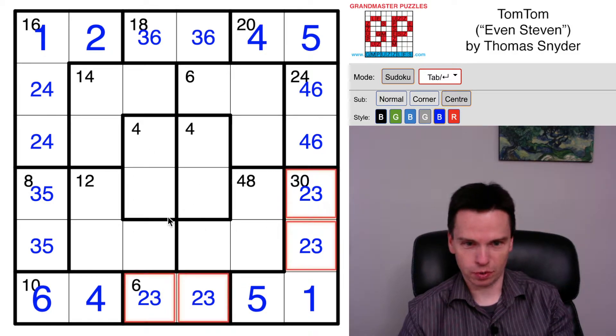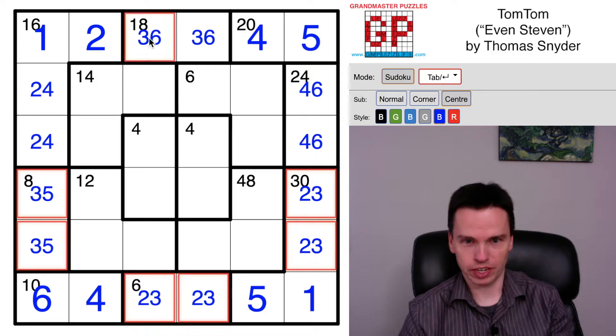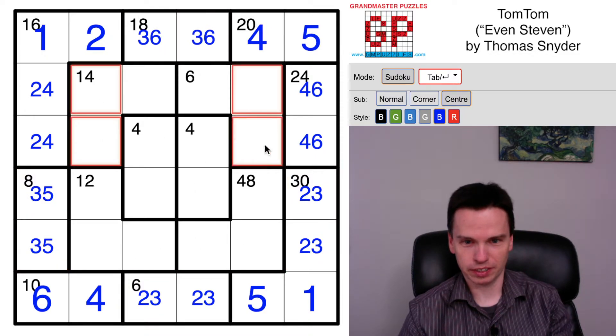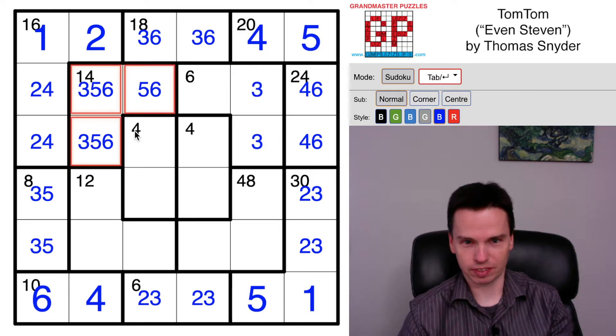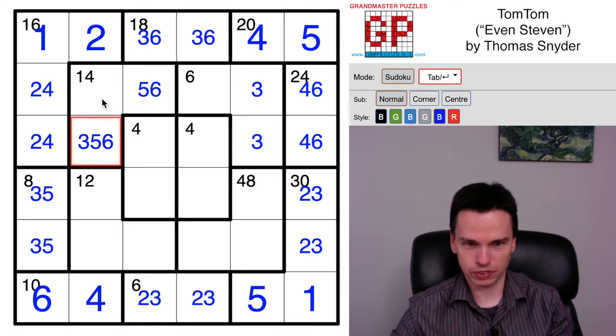You don't necessarily have to use this at all, but one thing you can see is actually where we don't know any 3s for sure, we know where 4 of them generally go, and that leaves behind these 4 cells for the other 3s. So you can get a 3 in this box, that will eventually tell you like 3, 5, 6 goes up here. That's one way you can make progress.